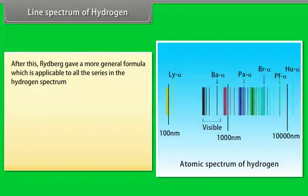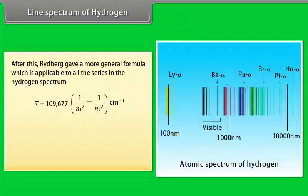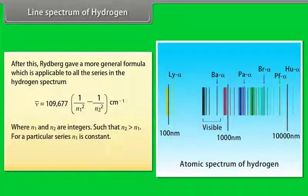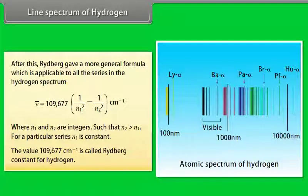The spectral lines in the visible region obey the Balmer formula: wave number = 109,677 × (1/2² − 1/n²) per centimeter, where n is an integer ≥ 3. Rydberg gave a more general formula applicable to all series: wave number = 109,677 × (1/n₁² − 1/n₂²) per centimeter, where n₁ and n₂ are integers with n₂ > n₁. The value 109,677 per centimeter is called the Rydberg constant for hydrogen.